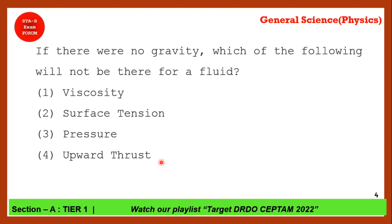If there were no gravity, which of the following will not be there for a fluid? A fluid has a force opposite to gravity — that is called upward thrust. So upward thrust will not be there if there is no gravity.